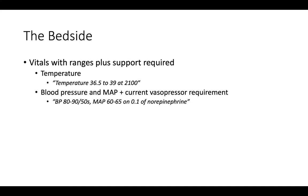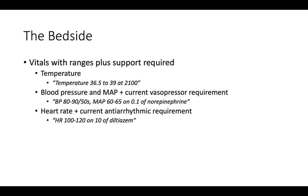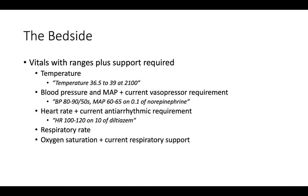Providing the current vasopressor requirement adds critical context, because a MAP of 65 has different clinical connotations depending on whether the patient is on or off vasopressors. Next, report heart rate and any current antiarrhythmic infusions. For example: heart rate 100 to 120 on 10 of diltiazem. Next, respiratory rate. And finally, oxygen saturation plus the patient's current respiratory support.